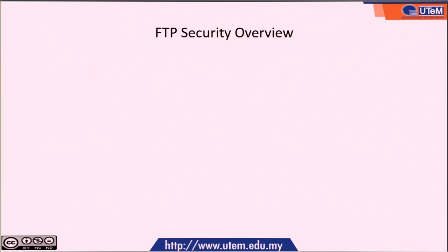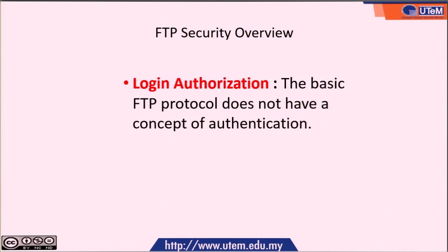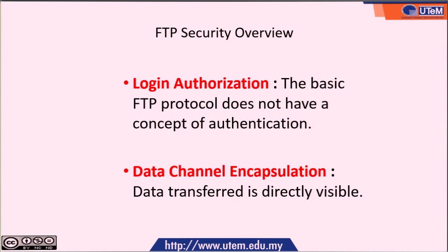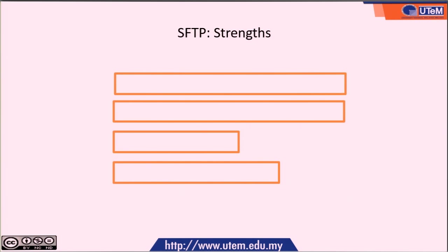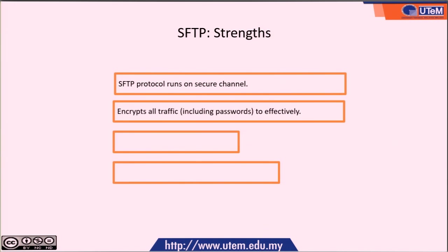In FTP security, the first issue is login authorization — the basic FTP protocol does not have a concept of authentication. There is also data channel encapsulation and data encapsulation, where in normal FTP the data transfer is directly visible if you capture the network. If we secure it using SFTP, the secure FTP has several strengths: the FTP protocol runs on a secure channel, all traffic is encrypted including the password, it provides a variety of authentication methods, and it can be automated by public and private key authentication.